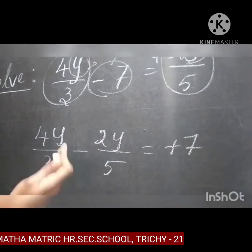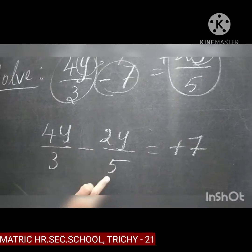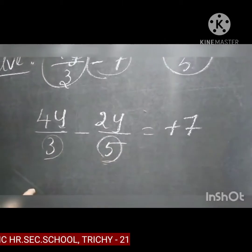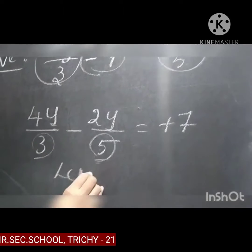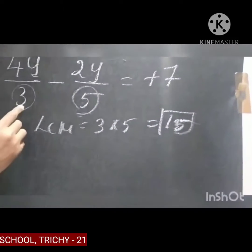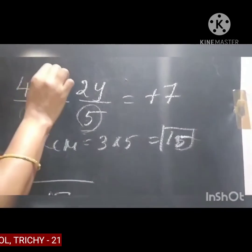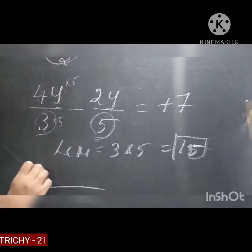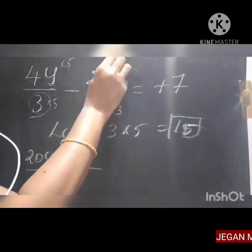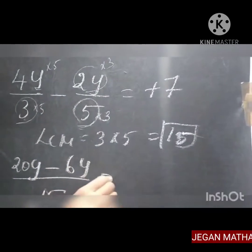Now you can simplify the given equation and find out the value of this variable. Here we have 4y divided by 3 minus 2y divided by 5. You have to find out the LCM of these because they are unlike fractions. LCM of 3 and 5 is 3 into 5, which is 15. So keep the first term — LCM is 15 — multiply 4y by 5 to get 20y, minus multiply 2y by 3 to get 6y. The answer is 20y minus 6y.